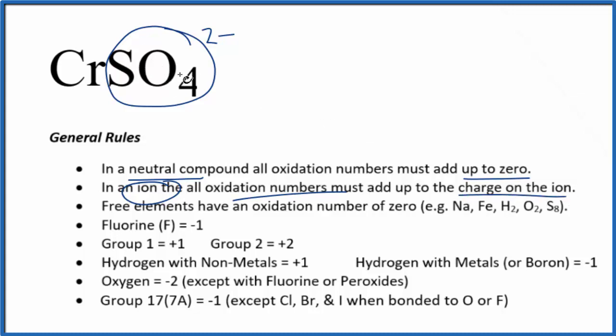So sulfur and the four oxygens, their oxidation numbers, they're going to equal this 2- here. Because of that, the chromium has to have a plus 2 as its oxidation number.